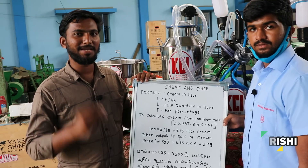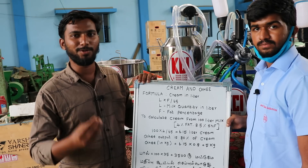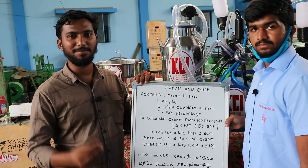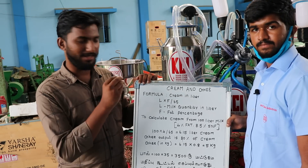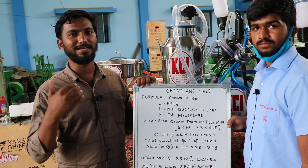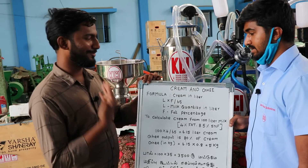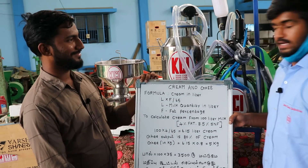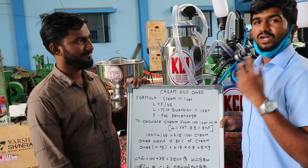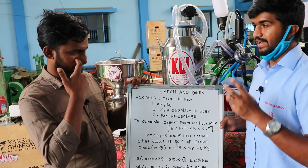This cream separator has great value for buyers. We have explained that and converted it into Tamil. What is the benefit? Now, for any agricultural product, value addition is key. The milk gets value addition through the cream separator.